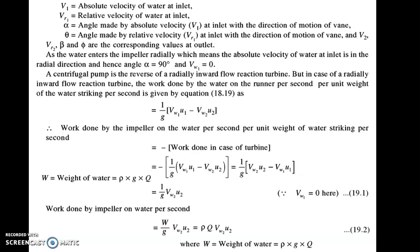The shaft power is the maximum power in case of a centrifugal pump. After shaft power there is impeller power which is reducing, and after impeller power there is manometric power which is again reducing. So output is reducing as we know, and efficiency is output upon input. Like in the case of a turbine we have seen three types of efficiencies: hydraulic efficiency, mechanical efficiency, and overall efficiency. Here also we are going to see three types of efficiency, only in reverse manner.